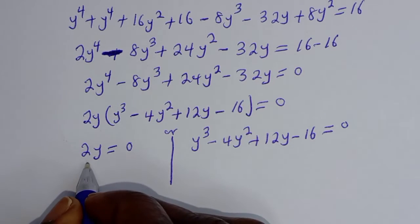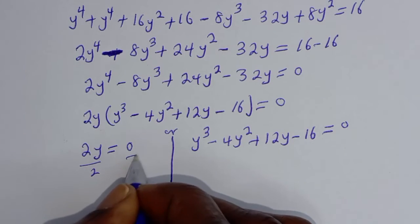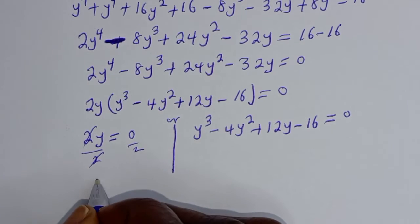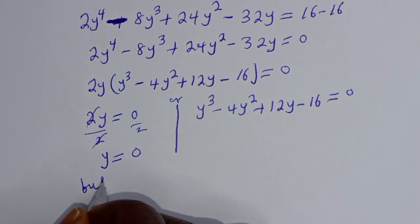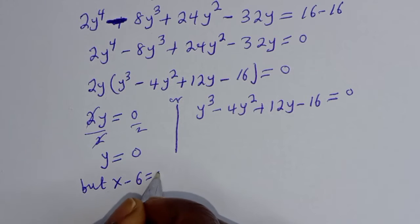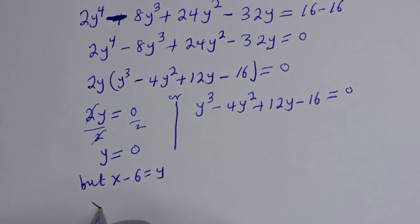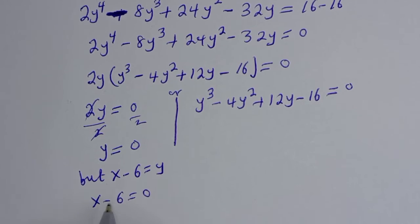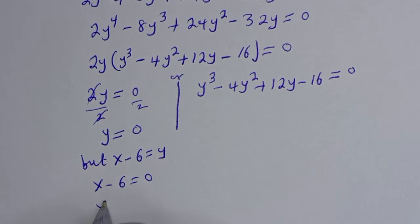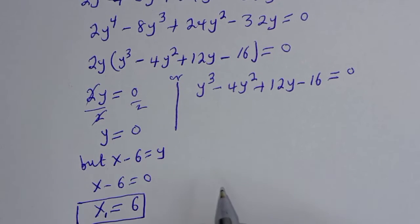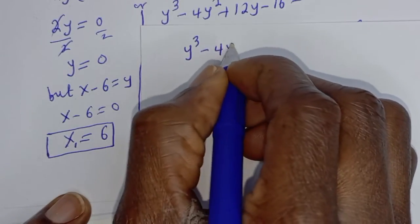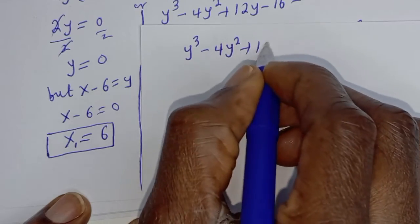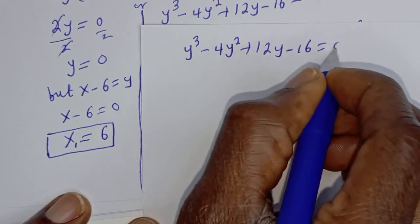Dividing by 2 in the first case gives y equals 0. Since x minus 6 equals y, we have x minus 6 equals 0, therefore x equals 6. Let's call this x₁. Now for the second case: y³ minus 4y² plus 12y minus 16 equals 0.